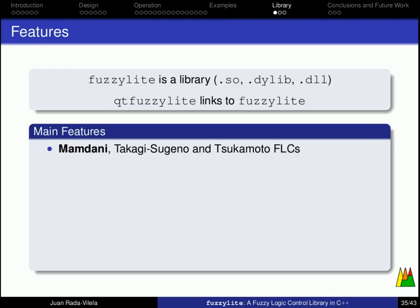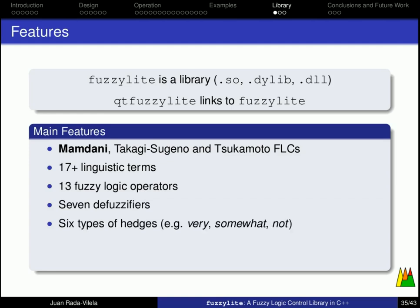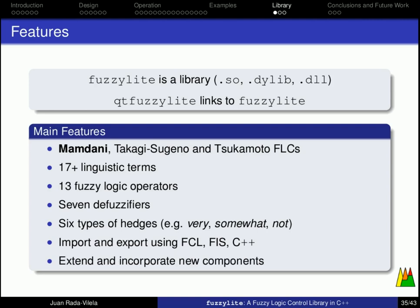The main features of FuzzyLite are Mamdani, Takagi-Sugeno, and Tsukamoto fuzzy logic controllers. The Mamdani controllers are the ones that I have explained in this tutorial, and the others are, you can read the paper, which are explained there. FuzzyLite has over 17 linguistic terms, 13 fuzzy logic operators to model your fuzzy sums and multiplications, that is, your t-norms and your s-norms, 7 defuzzifiers, 6 types of hedges that I have told you before, including very, somewhat, and not. You can import and export using different formats, also export to FuzzyLite C++, and you can easily extend and incorporate new components to FuzzyLite.